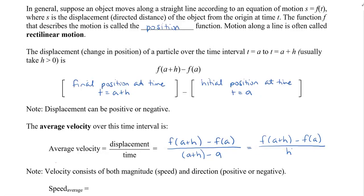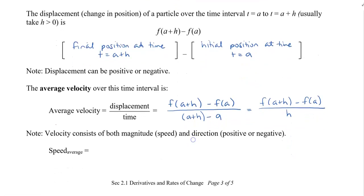Note that velocity consists of a magnitude and a direction — whether it's positive or negative. However, when we talk about speed or average speed, it's only a positive value. So we can take the absolute value of the average velocity to find the average speed.